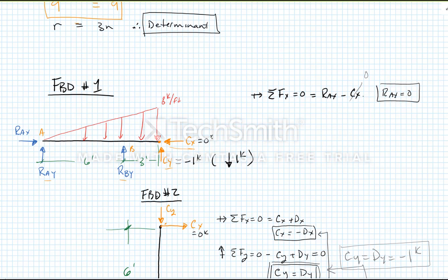I'm going to sum my moments about point A equal to zero, counterclockwise being positive. The forces at RA drop out because they go through that point. CX is zero. So let's just go left to right.